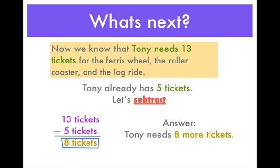Now we know that Tony needs 13 tickets for the Ferris wheel, the roller coaster, and the log ride. But we also circled another key number — Tony already has 5 tickets. So let's subtract that: 13 tickets minus 5 tickets equals 8 tickets. Tony needs 8 more tickets.